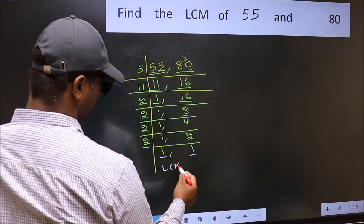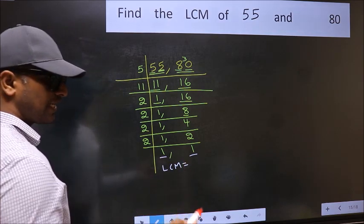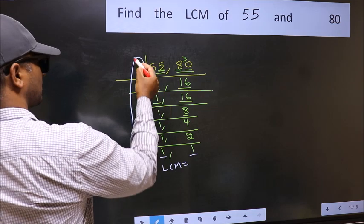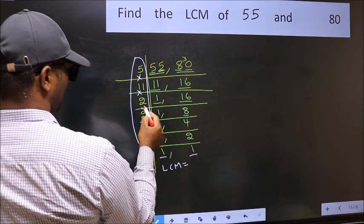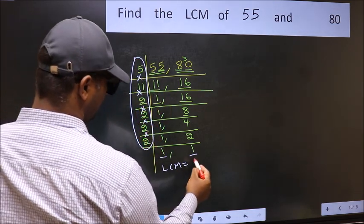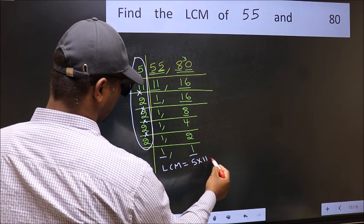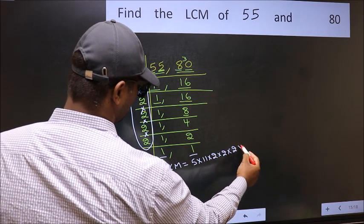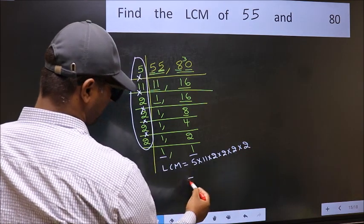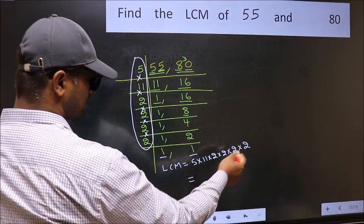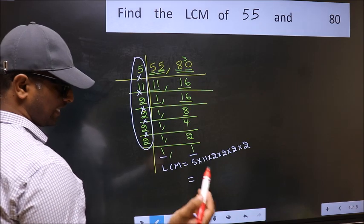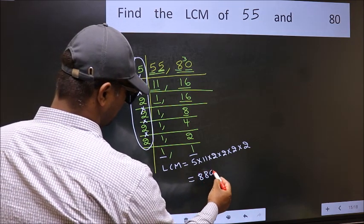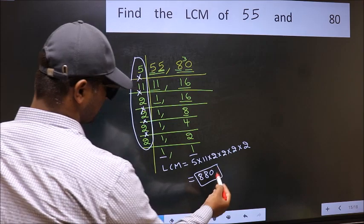So our LCM is the product of these numbers: 5 into 11 into 2 into 2 into 2 into 2. When we multiply these numbers we get 880, which is our LCM.